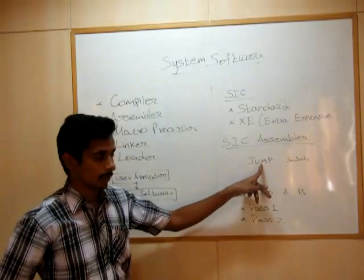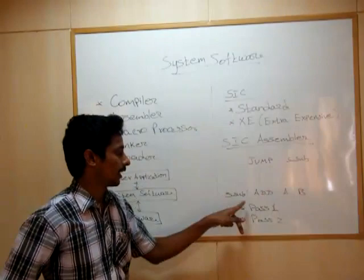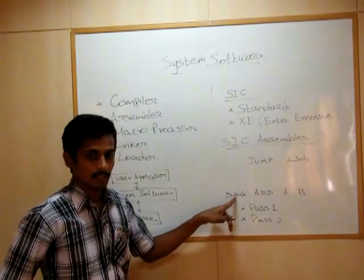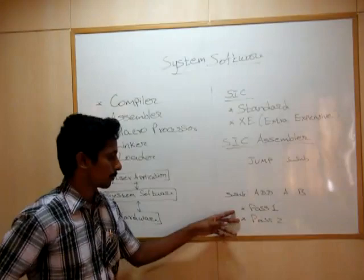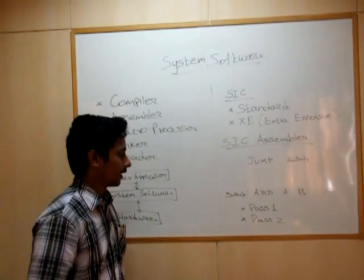When the Jump instruction is encountered, the conversion needs to be performed. We need the address of S_SUB, which is declared after the Jump line. We need to know the address of the S_SUB subroutine. For that, we use some approaches called Passes — Pass1 and Pass2 Assembler.